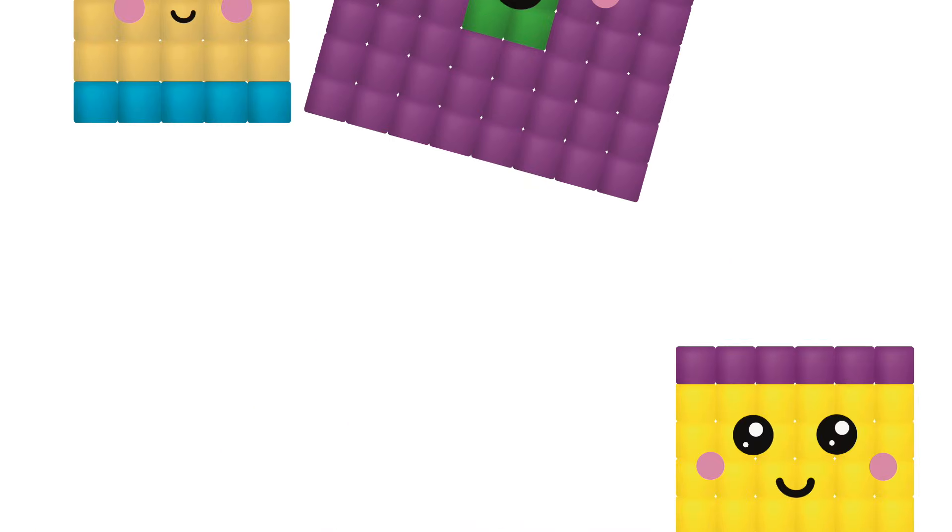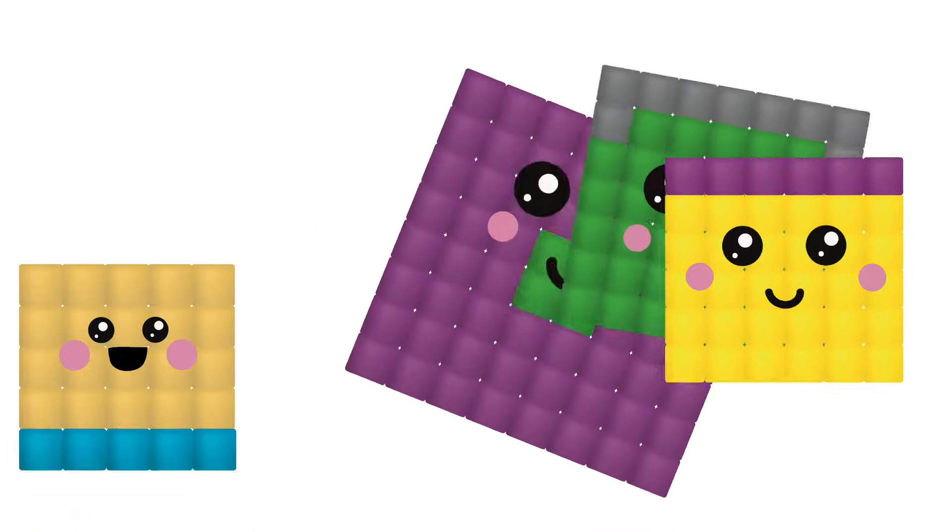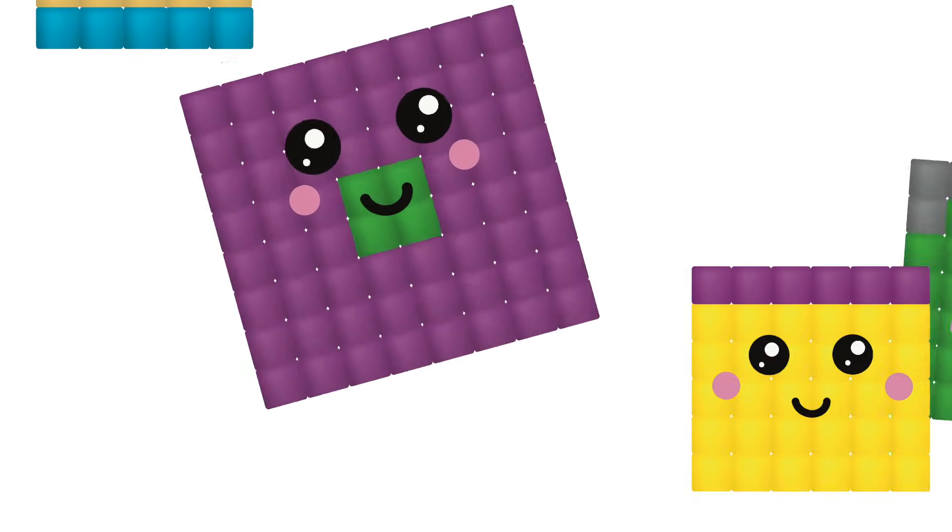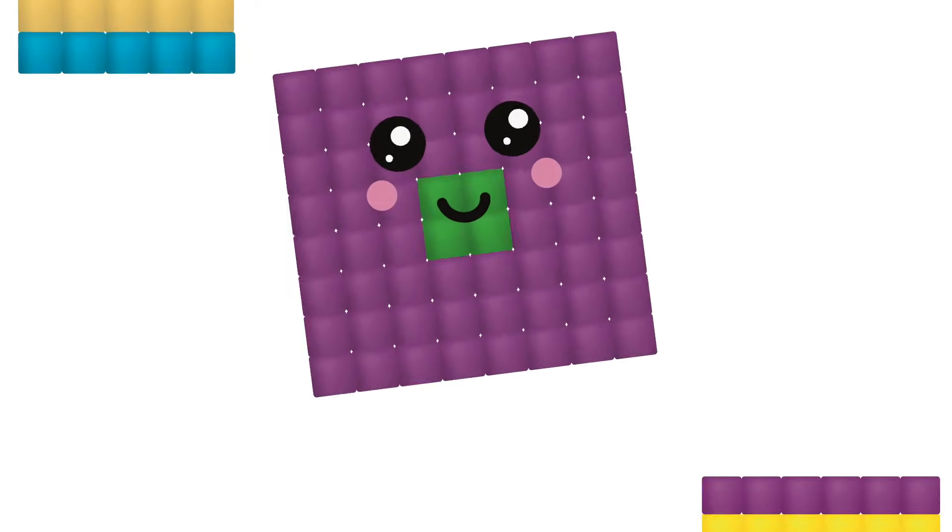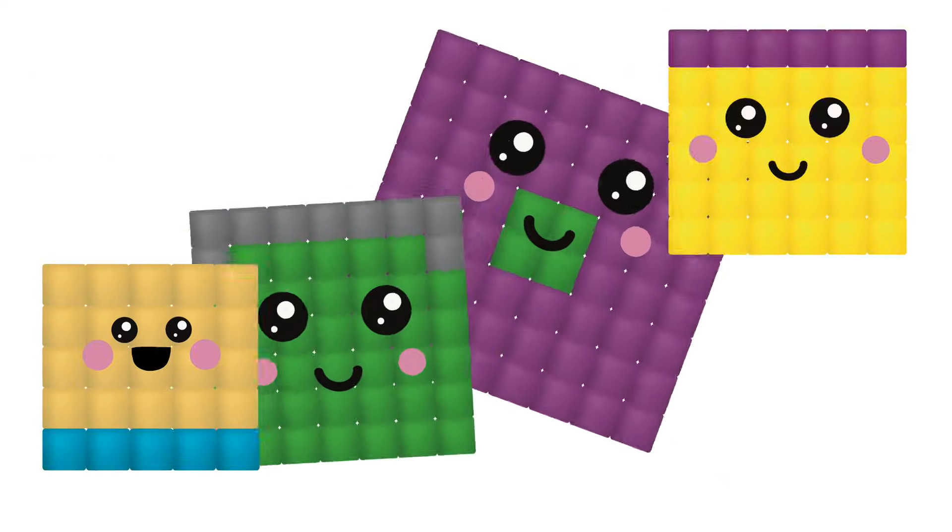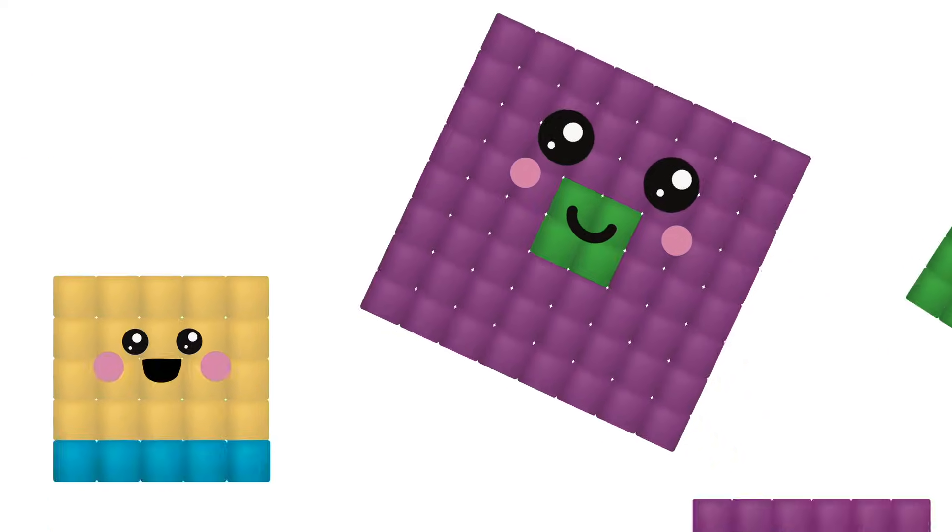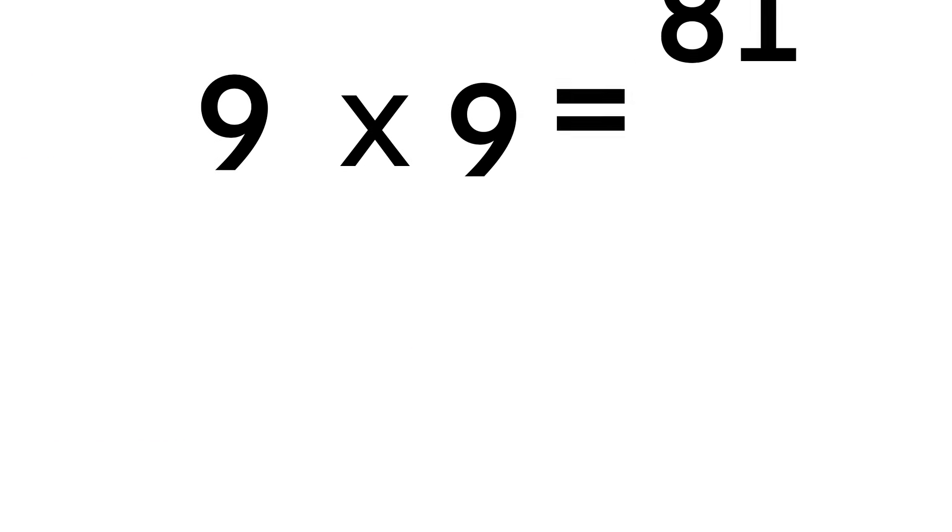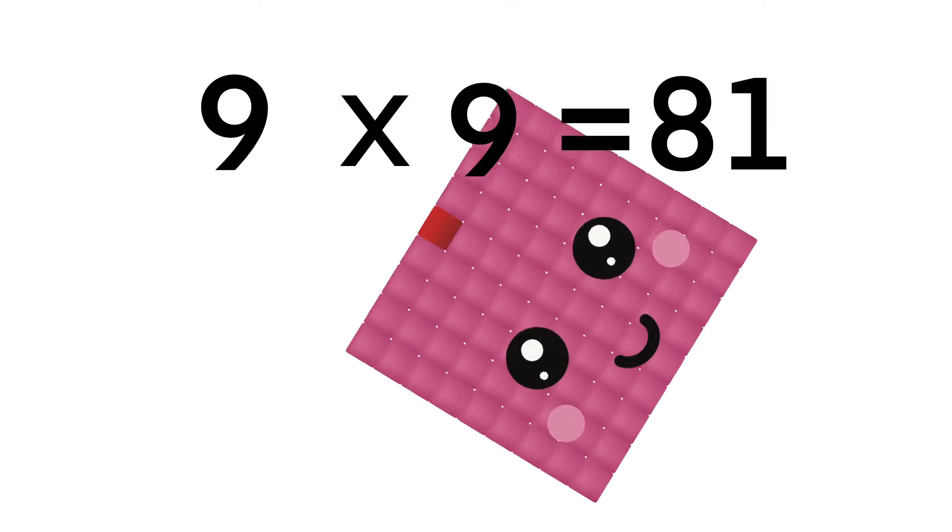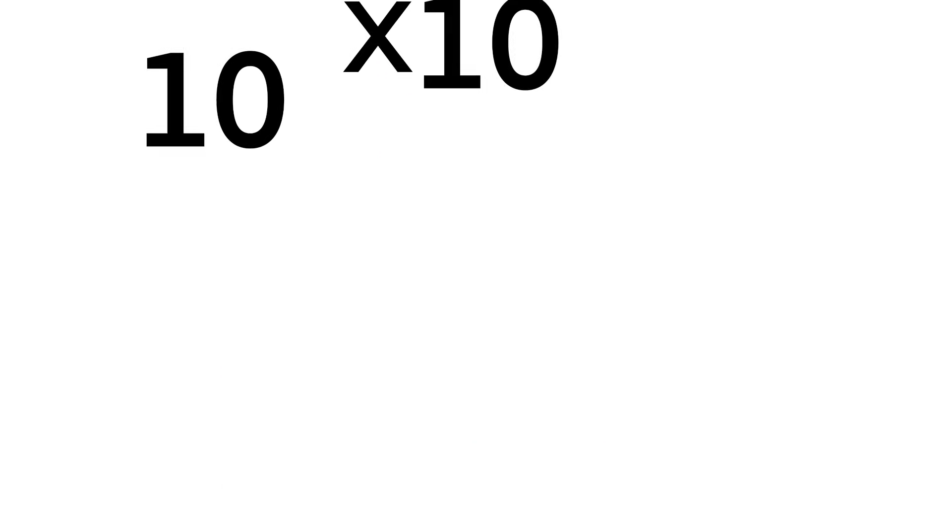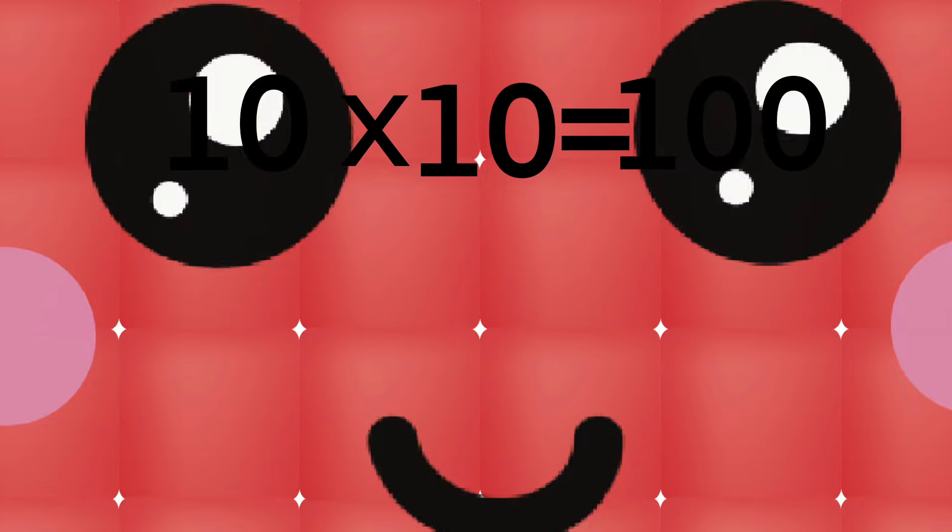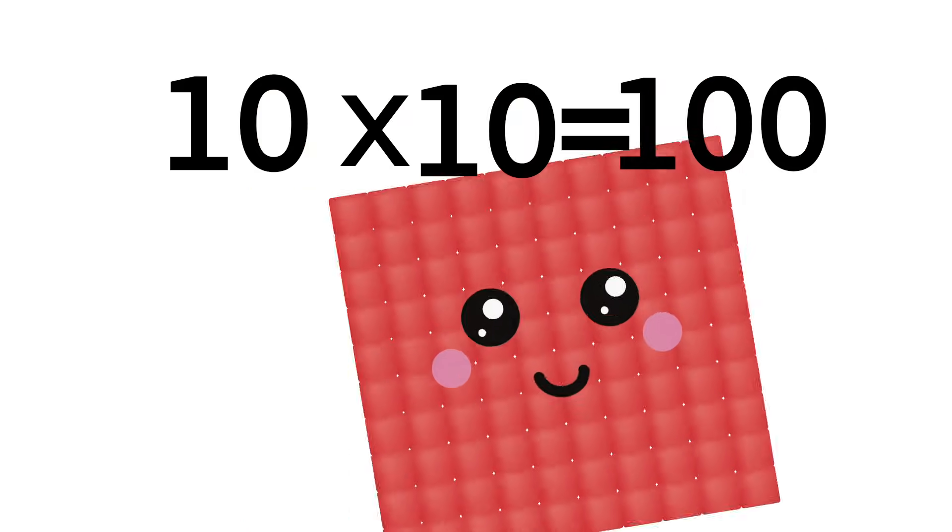It's the square numbers, multiplying is the key. It's the square numbers, come count with me. 9 times 9 equals 81, square numbers are so much fun. 10 times 10 equals 100, it's true. Now we've learned them, thanks to you.